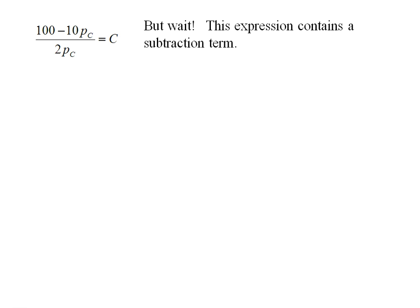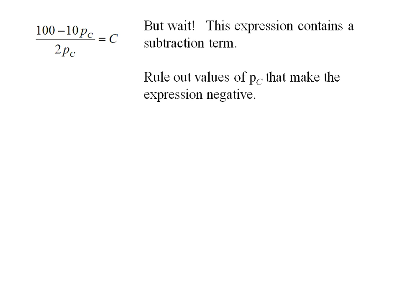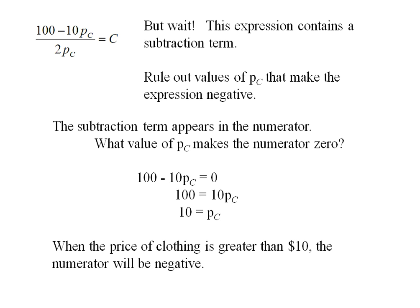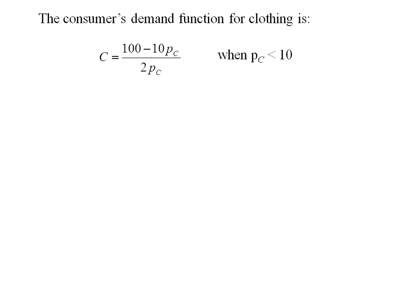We have to pause here because the numerator of this demand equation contains a subtraction term. We need to rule out any values of PC that make this expression negative, since we can't buy a negative amount of clothing. We ask: what price makes the numerator zero? Setting 100 minus 10 PC equal to 0 and solving for PC tells us that when the price of clothing is greater than $10, the numerator is negative, so the consumer buys no clothing. The demand function is therefore (100 minus 10 PC) over 2 PC when price is less than $10, and 0 when price is greater than or equal to $10.